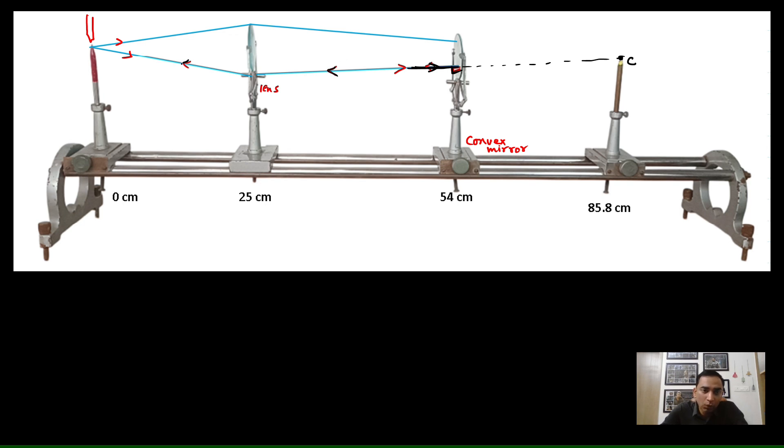So, the rays will retrace its own path and the image of that red pin will be formed over here and for that my eyes must be over here. And that is what used to happen. So that means we have confirmed that this convex mirror is present on the optical bench and this image pin is exactly at the center of curvature. Because exactly over this object pin, you are getting its real and inverted image exactly above it.